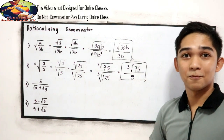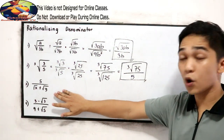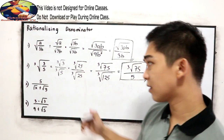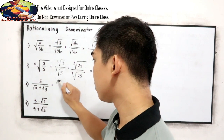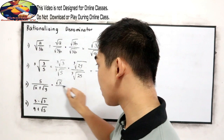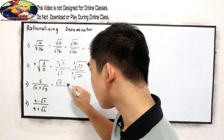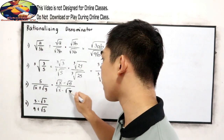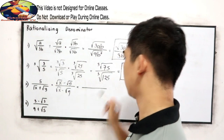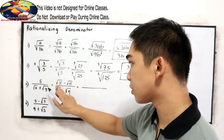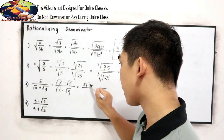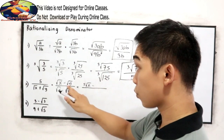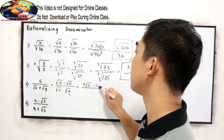Next, number 3. In number 3 we're going to get the conjugate of our denominator. So the shortcut is multiply it by the square root of x — our denominator — then change the sign to minus square root of y. Distributing: 5 times square root of x gives us 5 square root of x; 5 times negative square root of y gives us negative 5 square root of y.